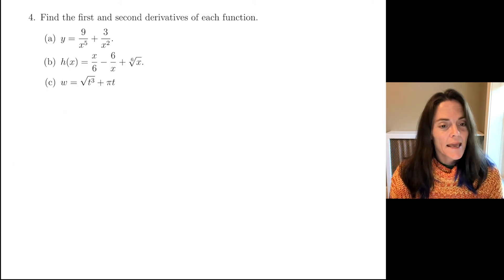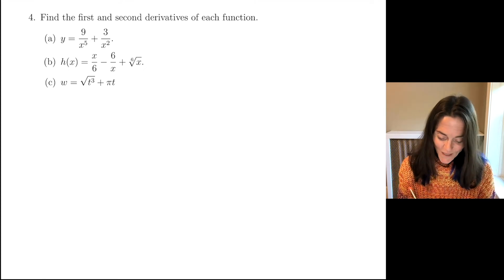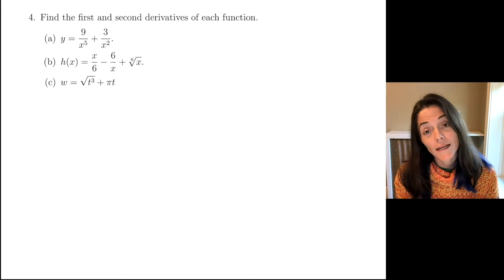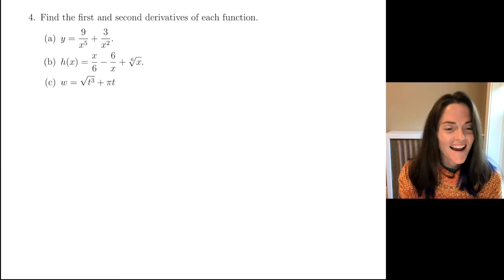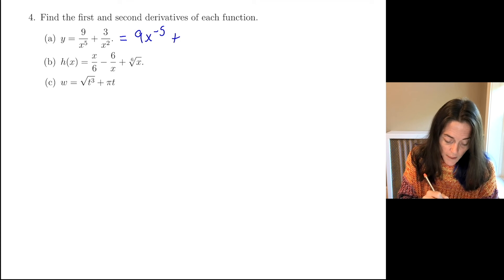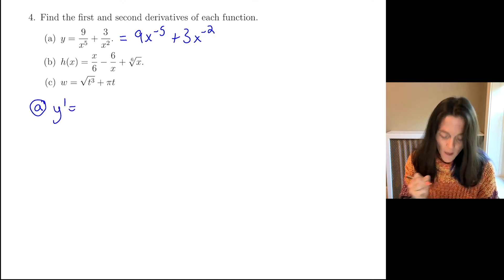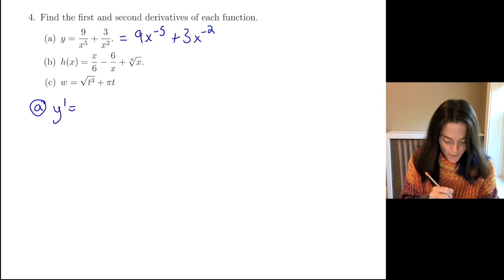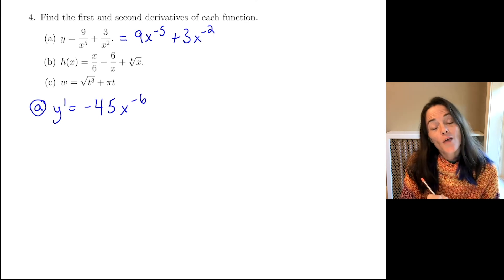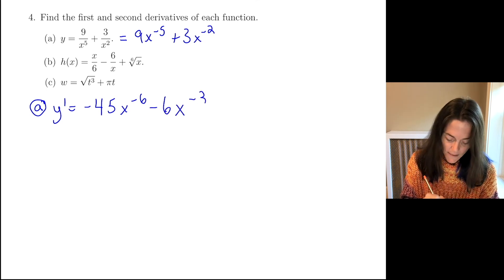Last problem. We want to find the first and second derivatives for each function. This is a power rule exercise, but it's also very nice because we have to practice writing a function as x to a power. For this first one, letter A, you notice I have 9x to the minus 5 plus 3x to the minus 2. We want y prime. We're ready for the power rule: we have 9 times minus 5, which is minus 45, times x to the power minus 6. We have 3 times minus 2, which is negative 6, times x to the power minus 3.